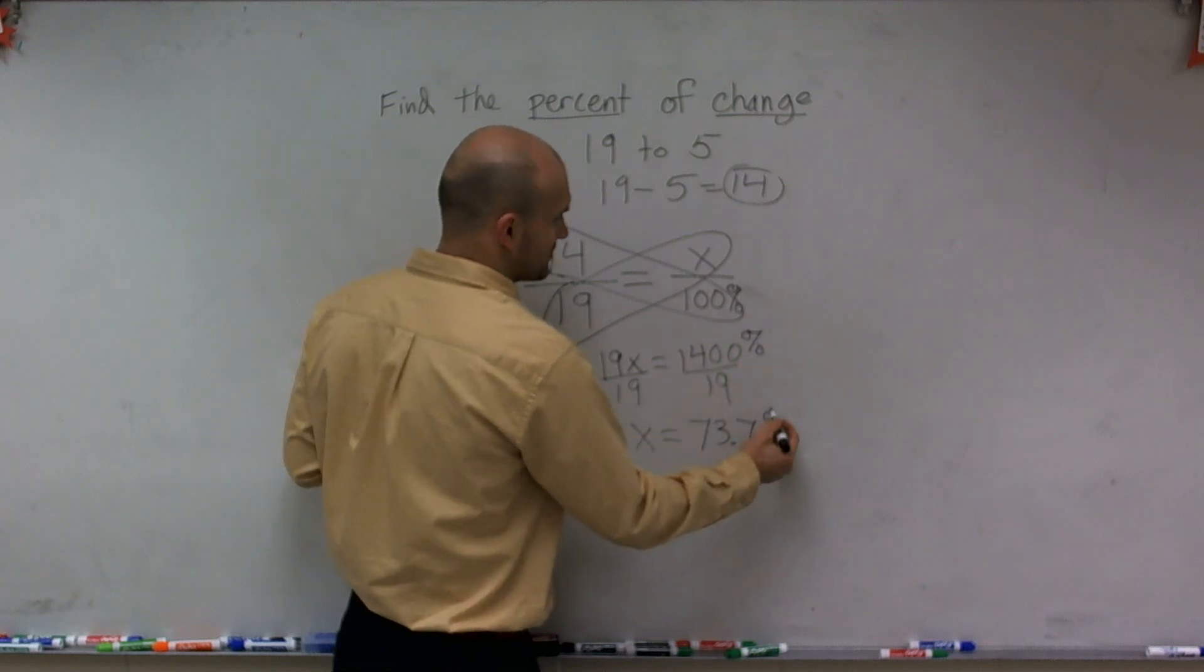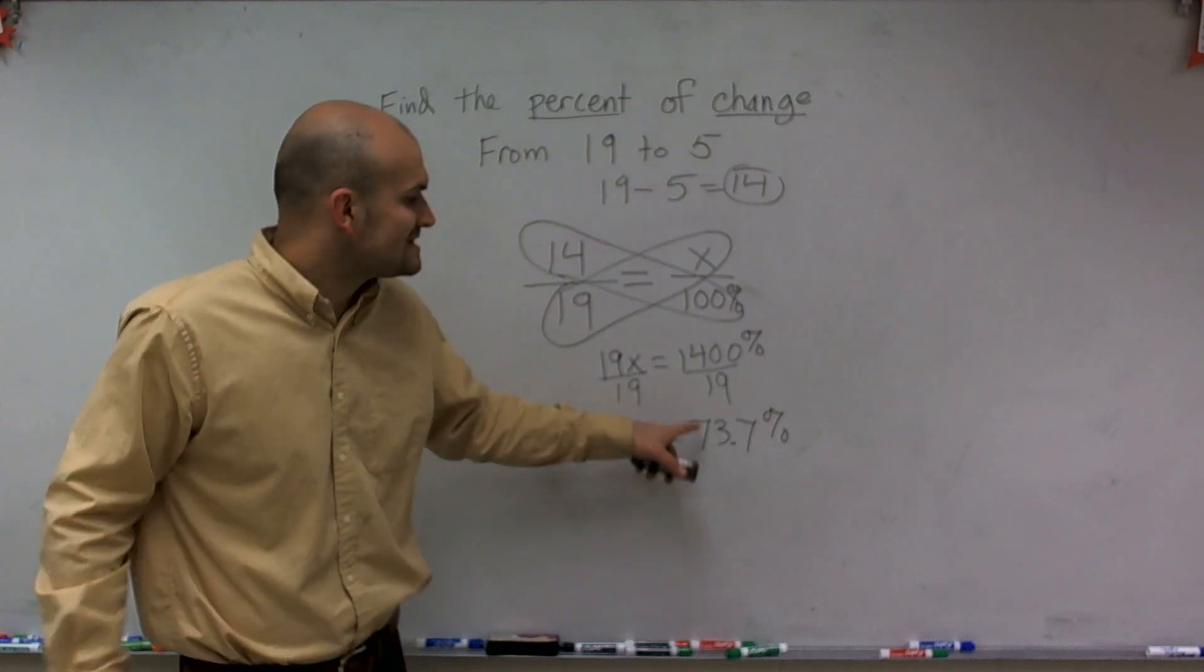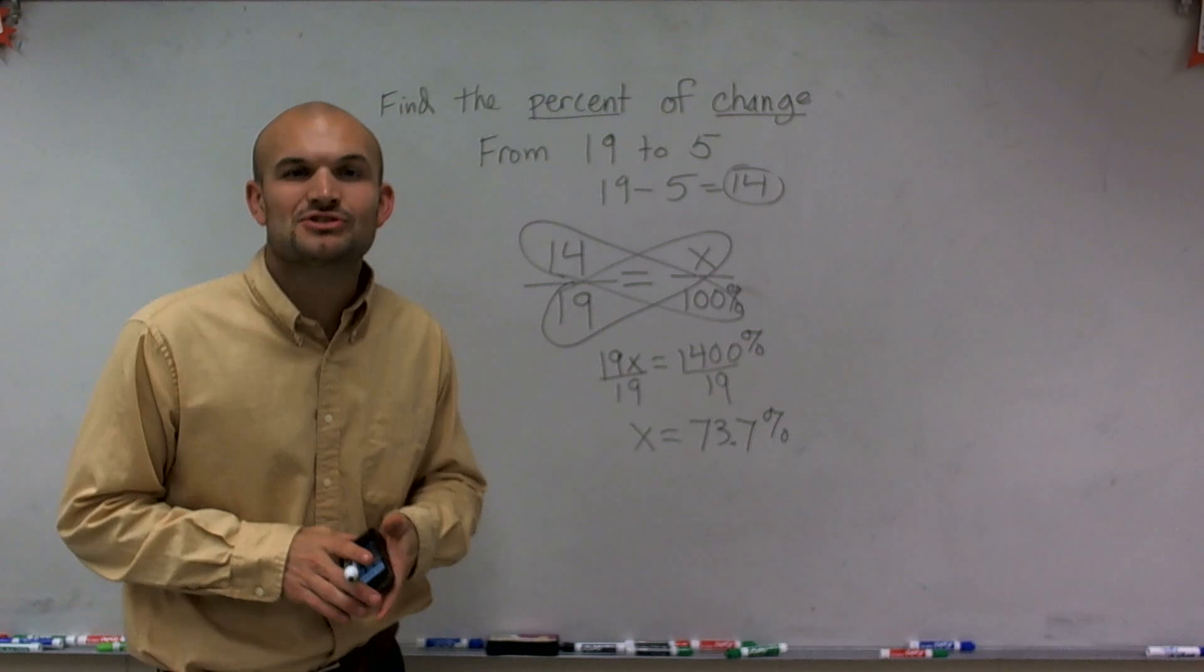And again, we could increase this as a percent. So therefore from 19 to 5 is a 73.7 percent decrease. So there you go. Hope you enjoy. Thanks.